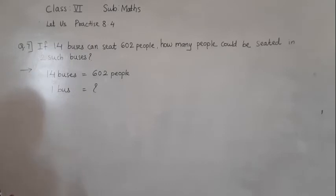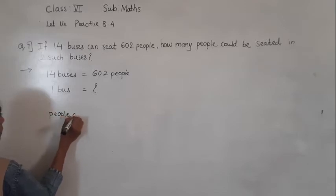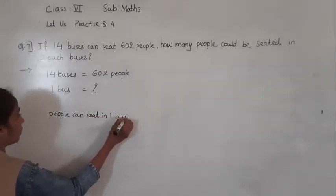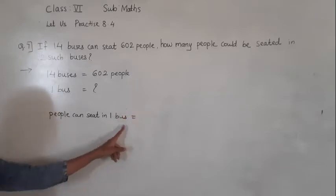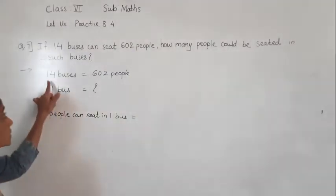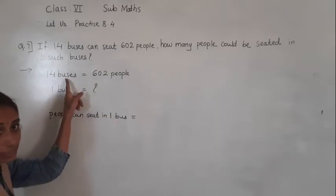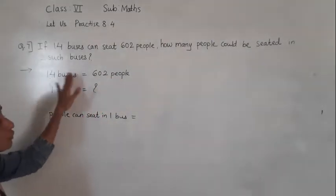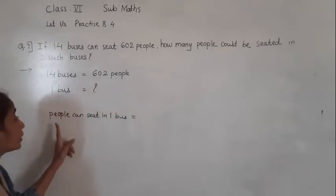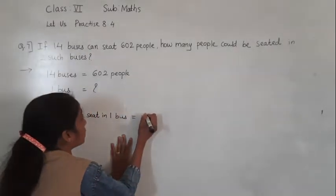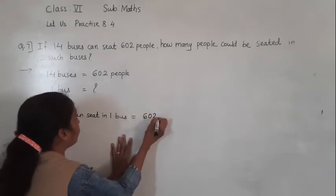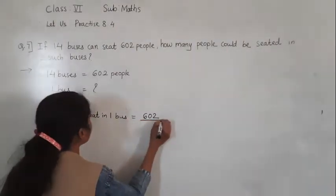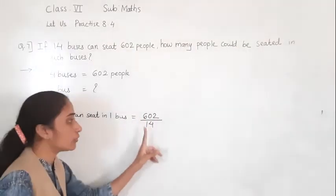So now let's find: in 1 bus, how many people can sit? It is given for 14 buses and we have to find for 1. So given for 14 buses — 602 people. Since it is given for many and we have to find for 1, we need to divide. So for 602 we will divide by 14.